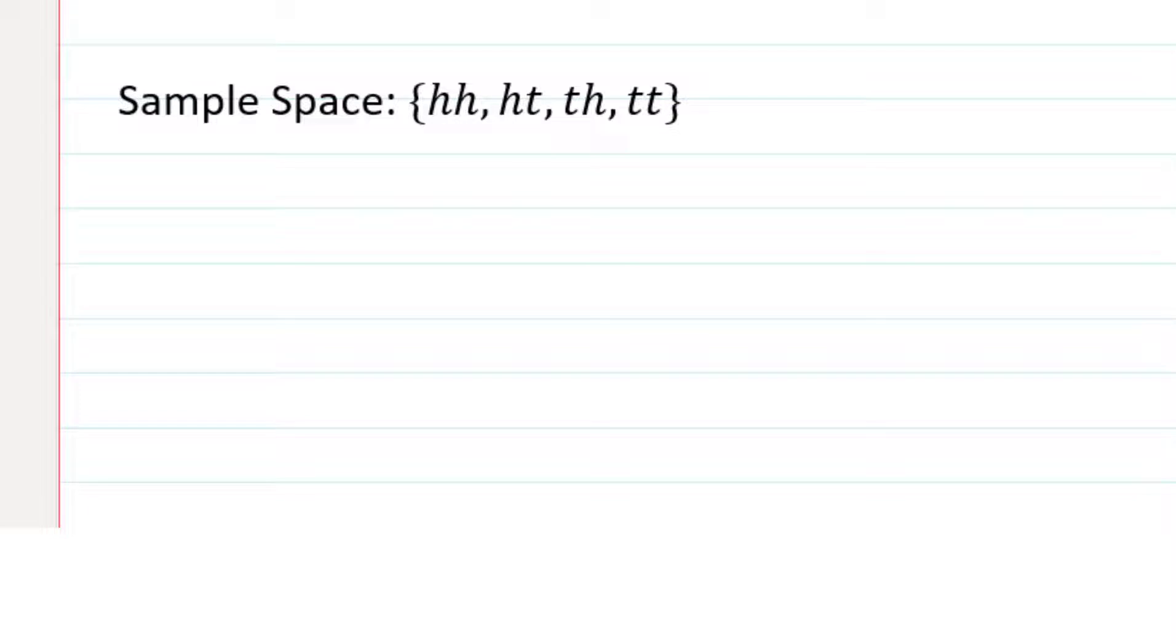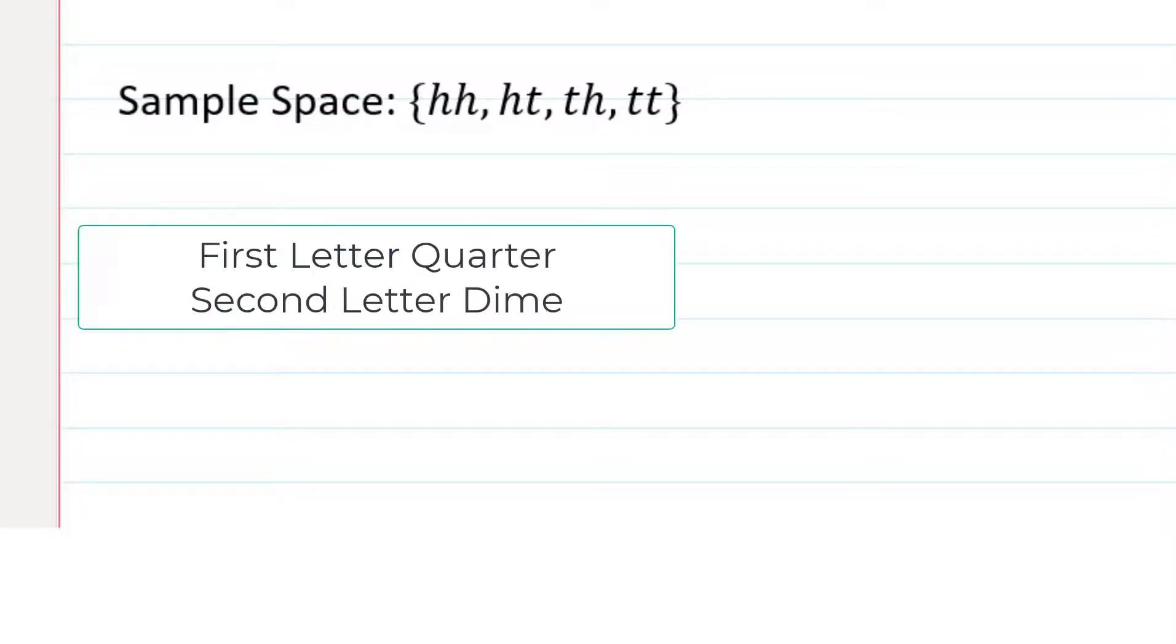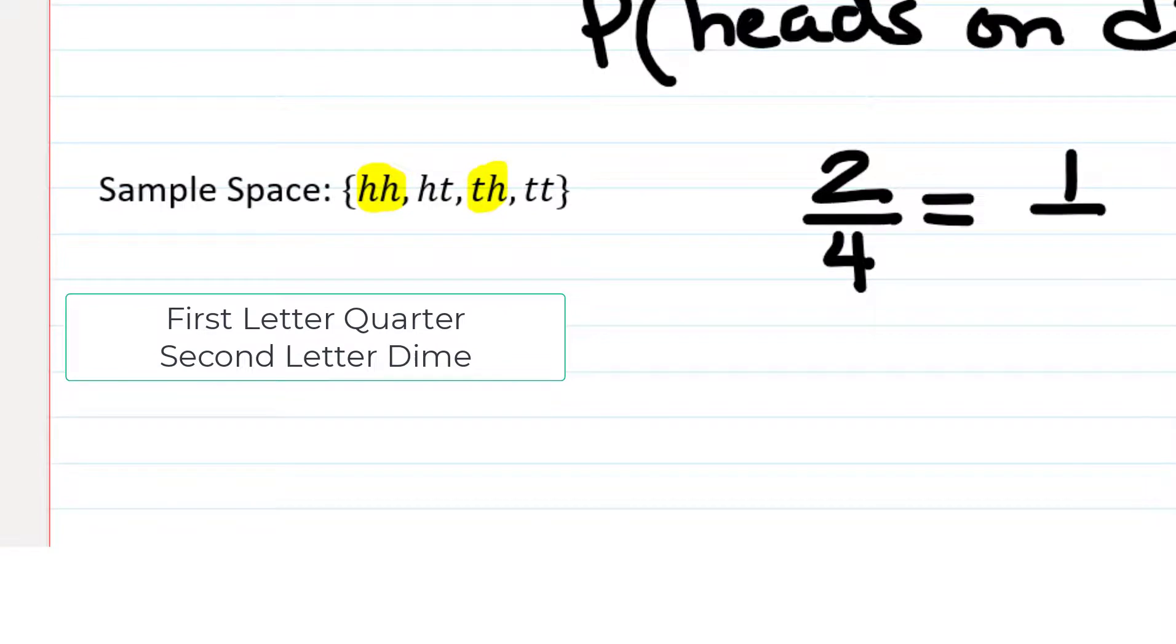Remember, we have HH, HT, TH, TT. The first in each pair represents the quarter, the second in each pair represents the dime. So if I'm looking through my sample space, anything that has an H in the second position is heads on the dime, and that happens twice. So again, we could conclude that there's a two-fourths probability, or one-half if we reduce to lowest terms, of getting heads on a dime.